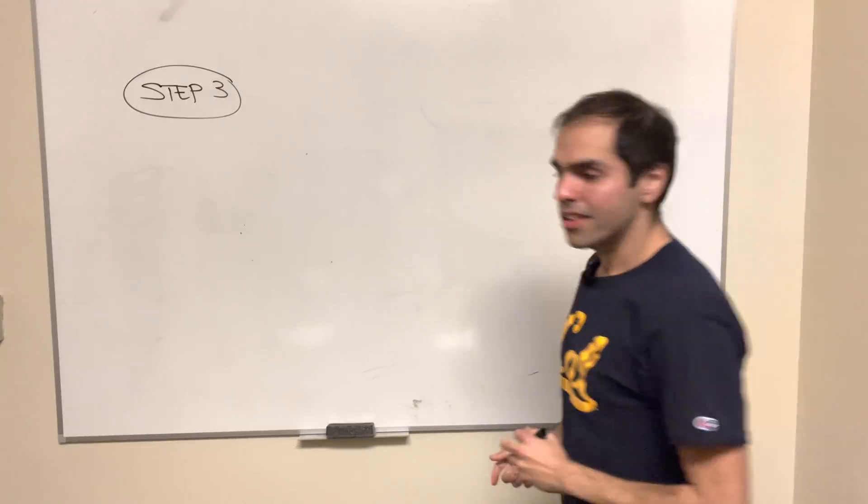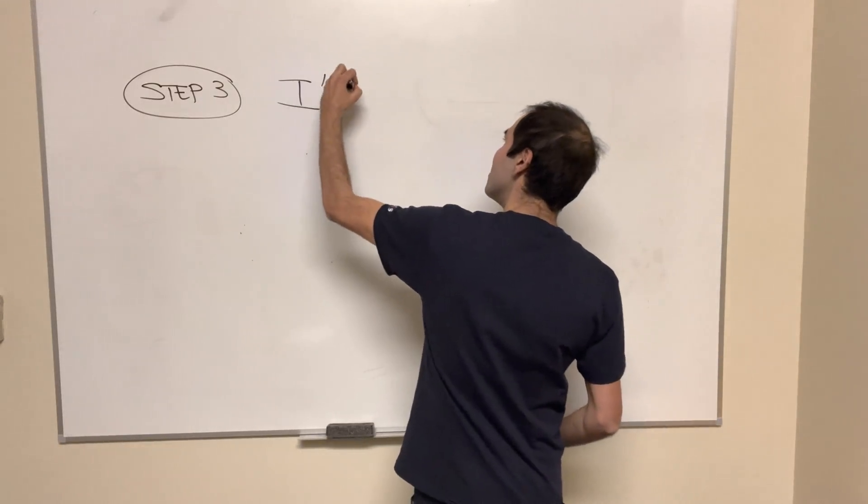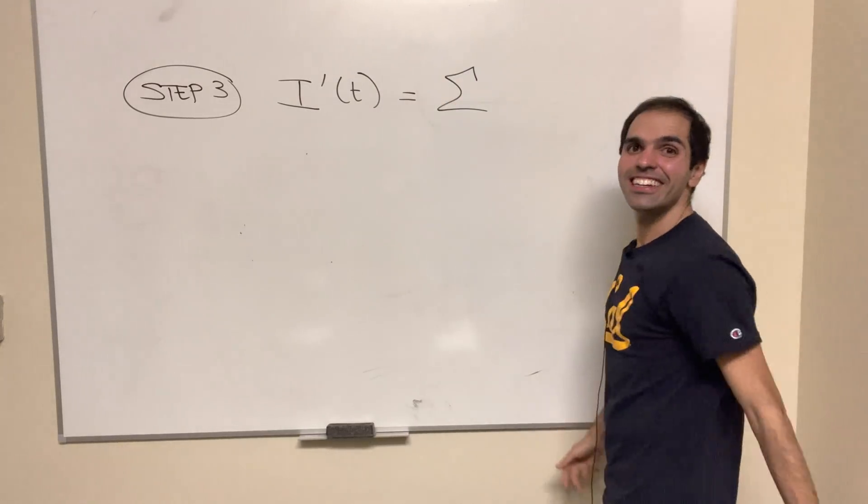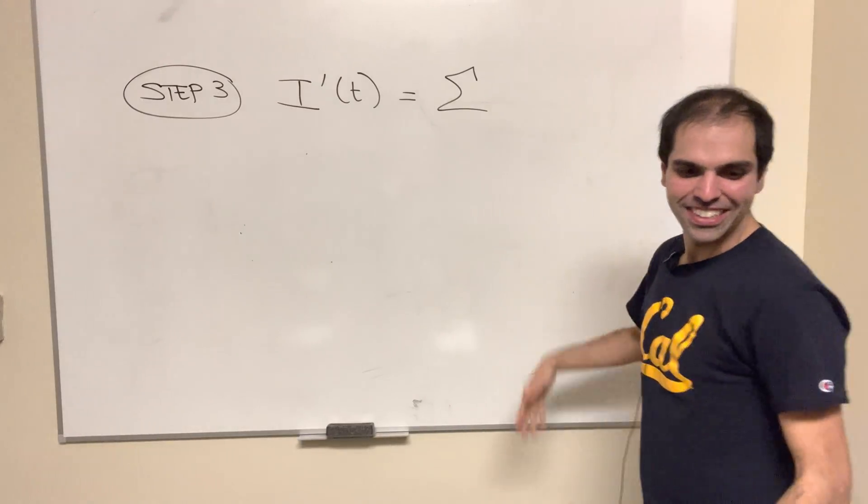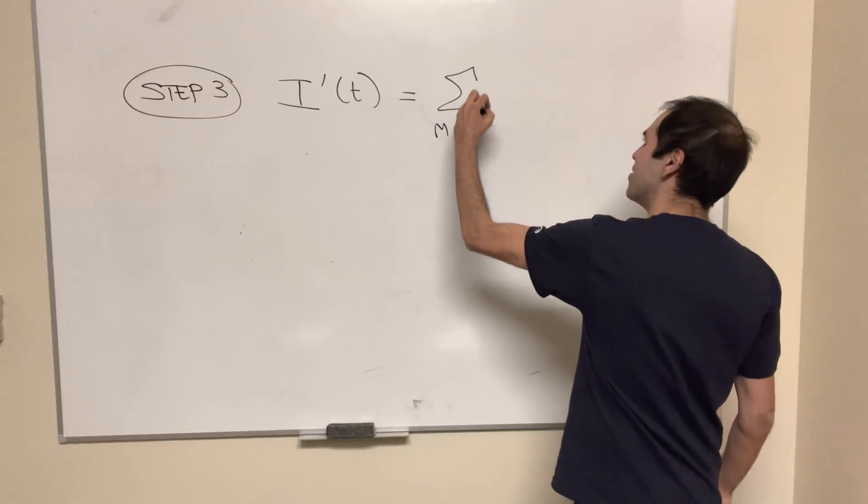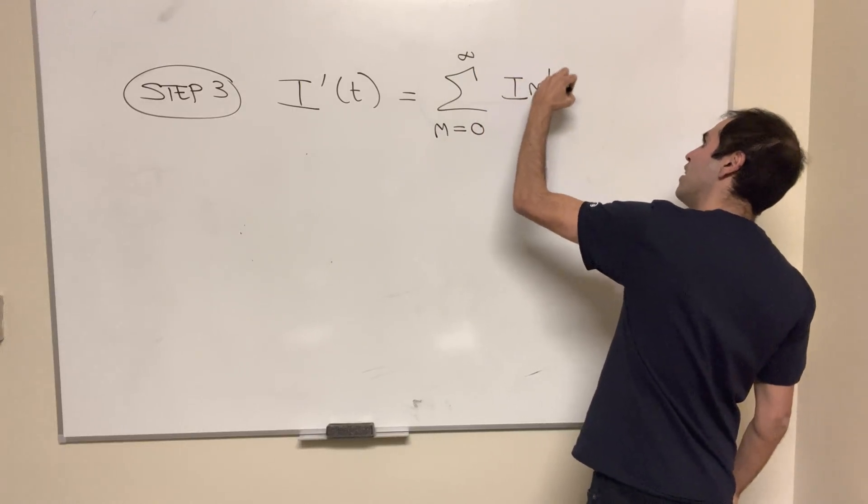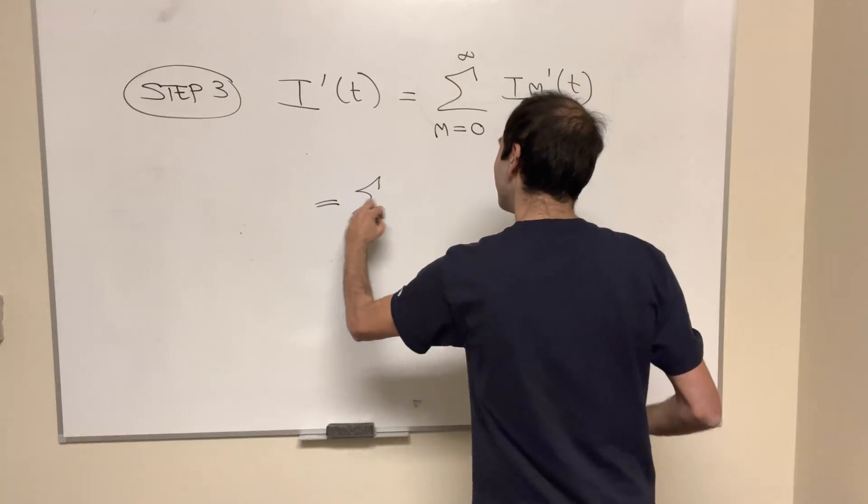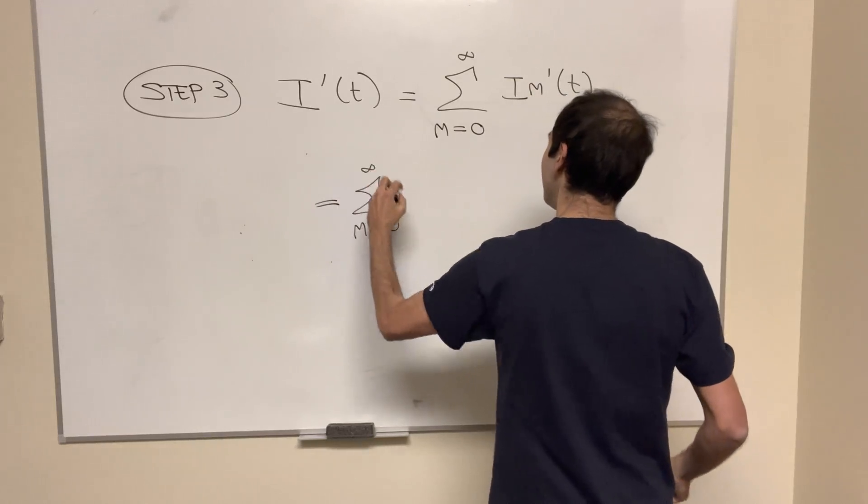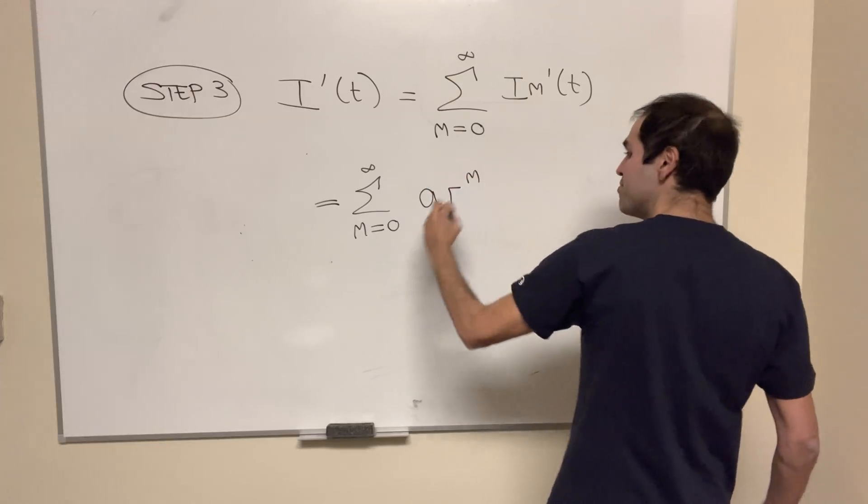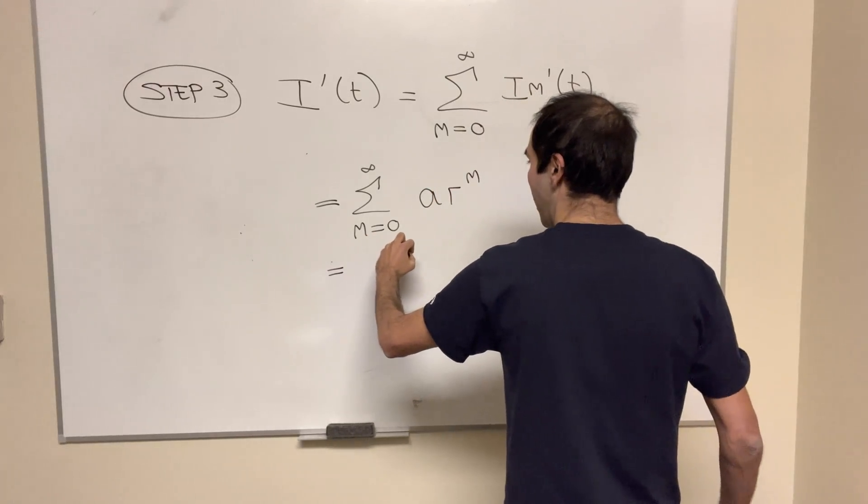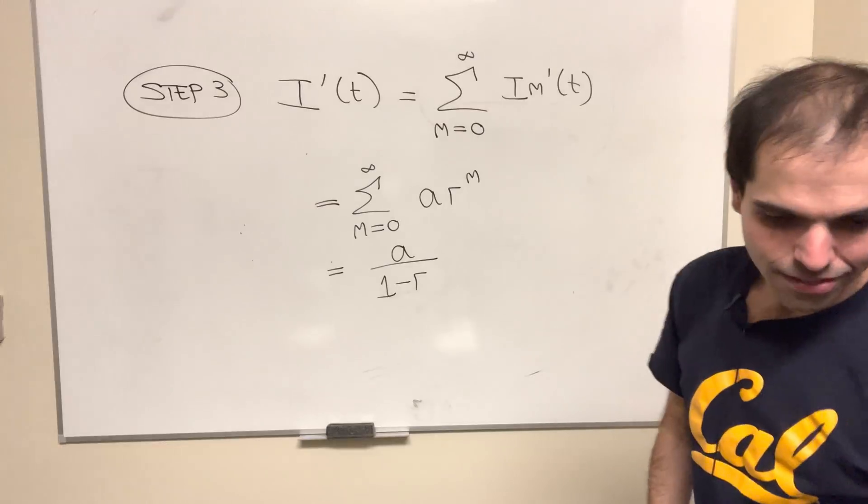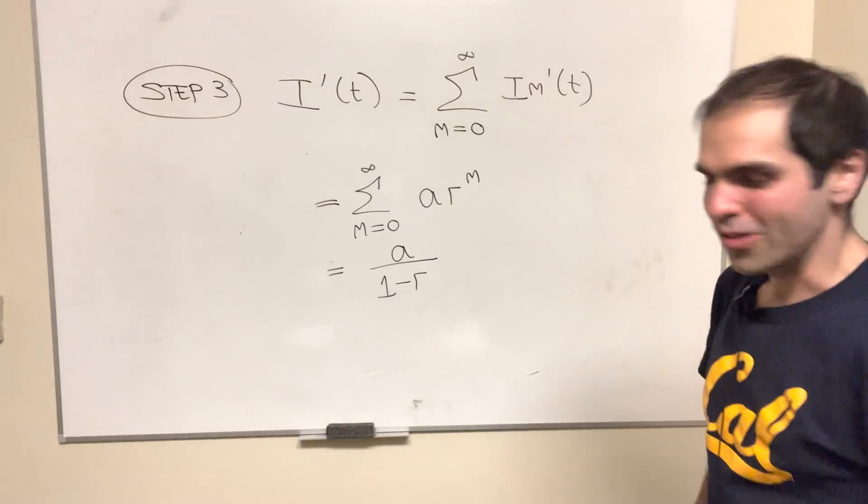And therefore, the derivative of our original function, well, again, i was the sum of i_m's, so let's be naughty again and differentiate under the sum, it's probably a dominated convergence theorem thing, so sum from zero to infinity, i_m'(t), but we just calculate the derivative, we found it's a geometric series, so m from zero to infinity of a·r^m, and so this just becomes a/(1-r), and I think the r is between 0 and 1, so it's nothing to worry about.